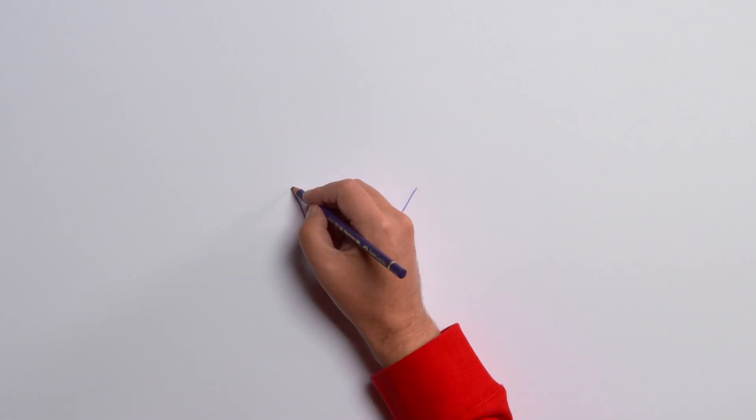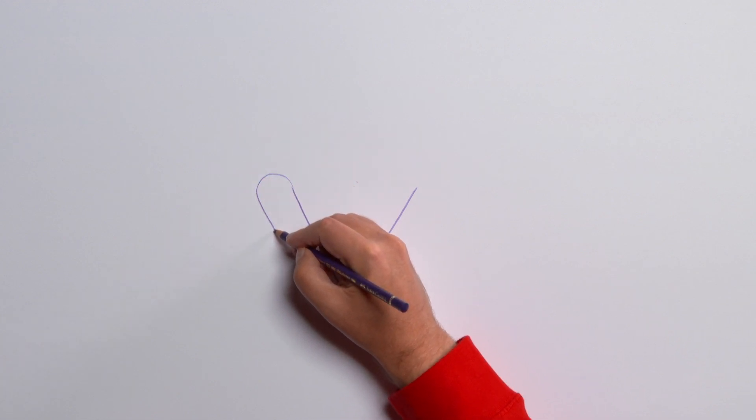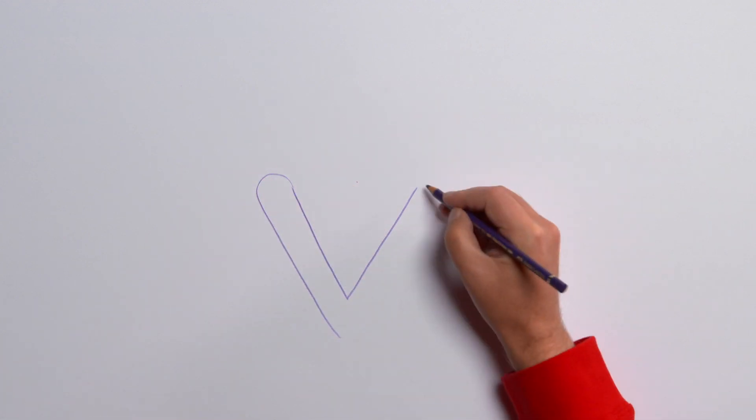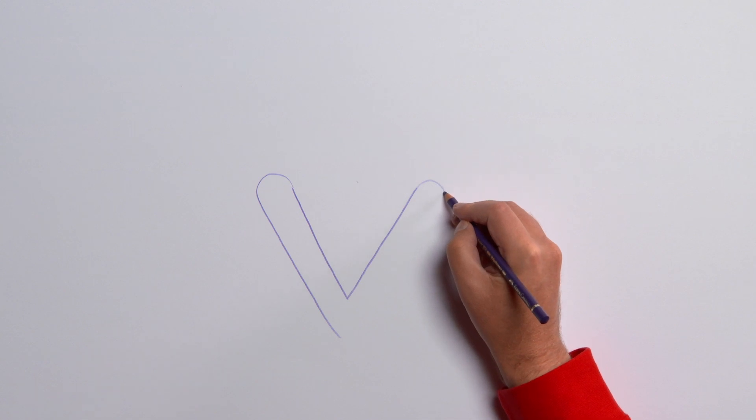Isn't it great? Our V needs to be a bit thicker. Do this by extending out from here, then following the line down to the bottom. Do the same on the other side.